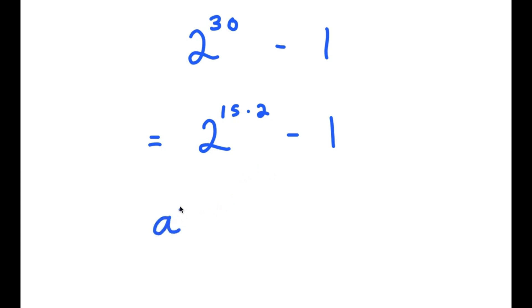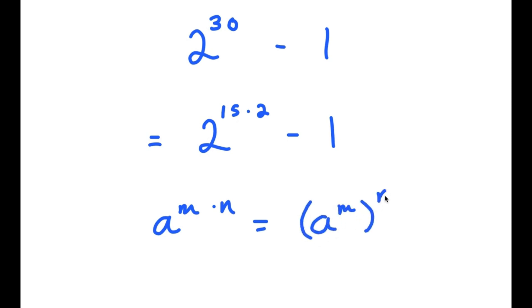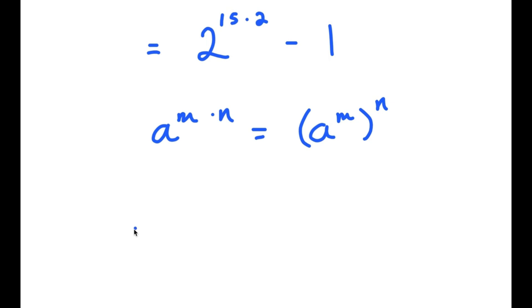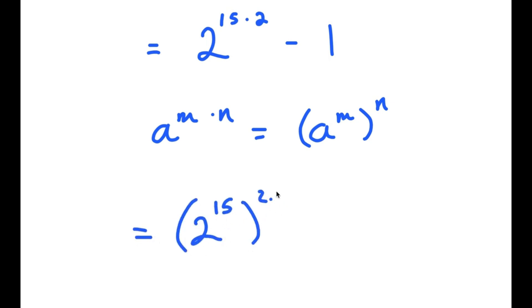If I have something in the form a to the power of m times n, this is equal to a to the power of m to the power of n. So 2 to the power of 15 times 2 is the same thing as 2 to the power of 15, to the power of 2.